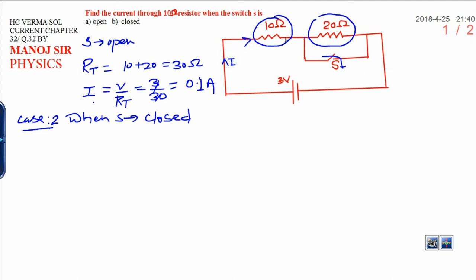Suppose that this is the current flowing in a circuit by this way, I current. And current will divide on this junction. And current has two choices for the flow. One choice is through the 20 ohm resistor, another through the switch.